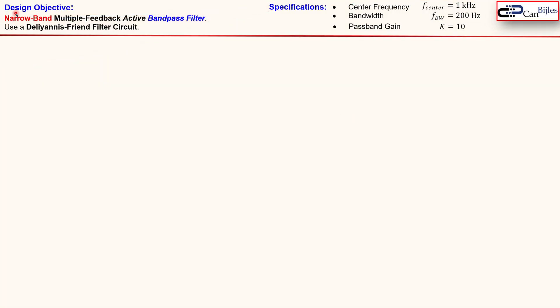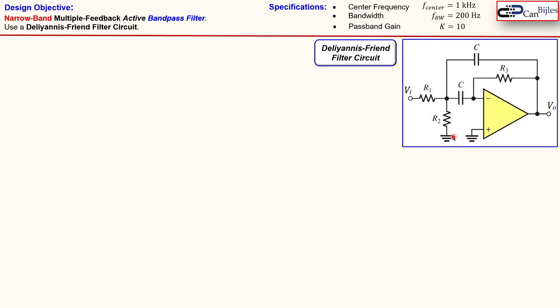So let's see it in action. So our design objective: narrow band multiple feedback active bandpass filter and we will use this Deliyannis-Friend filter circuit. Specifications: we would like to have a center frequency of one kilohertz, the bandwidth must be 200 hertz and our passband gain should be 10 or in this case 20 dB if you convert this to dBs. For our filter parameters in this example we only use one parameter which is our quality factor and that is then the f center over f bandwidth. Of course you can also use here the omegas but then you will cancel the two pis in the numerator denominator so the result will be the same so you get here 1000 or one kilohertz over 200 hertz and you get here 5.